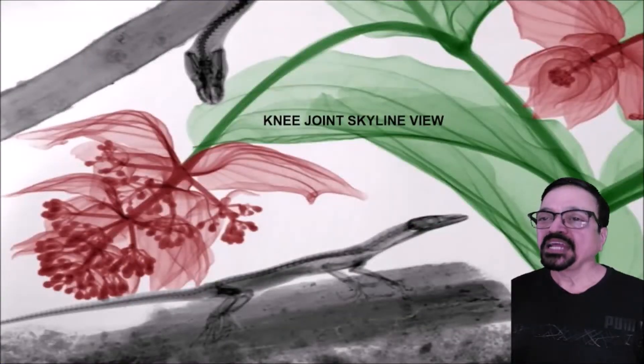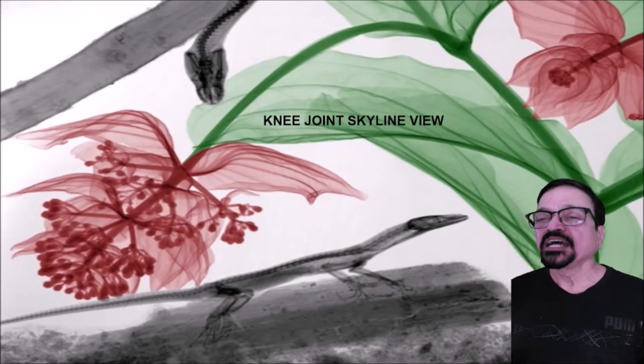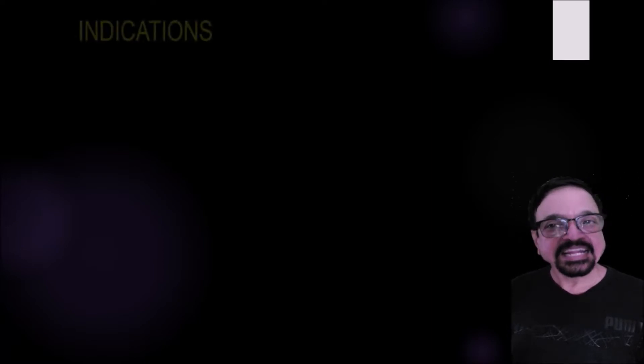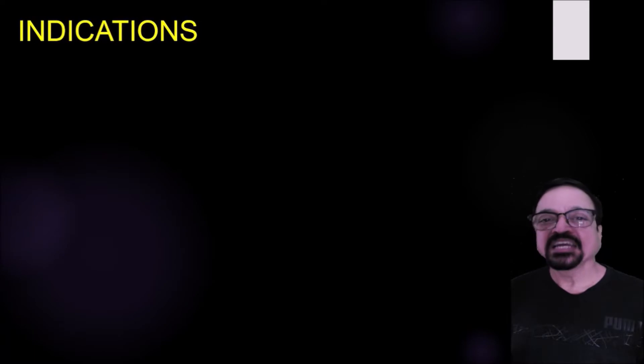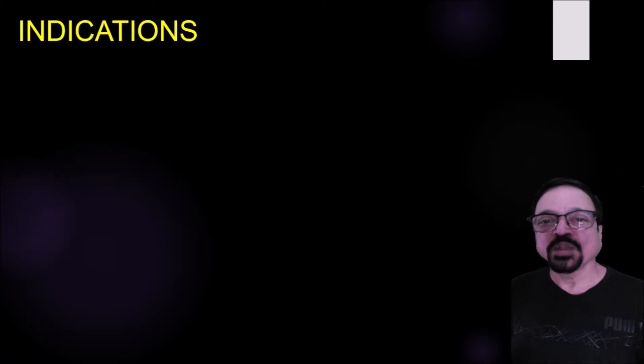Now let's come to the knee joint skyline view. This is a special view and not routinely recommended. The routinely asked projections are AP and lateral. Sometimes oblique is asked if fractures are suspected or if fractures are doubtful in AP, since lateral has a lot of overlapping.